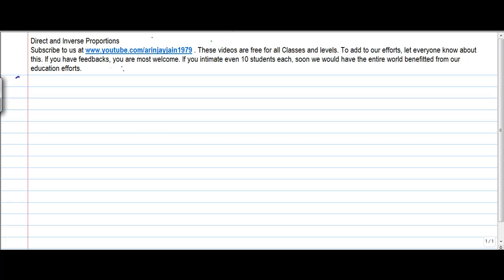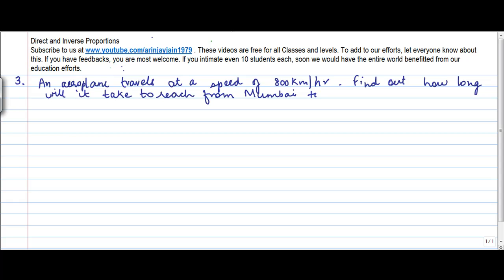Let's see problem number three on direct and inverse proportion. An aeroplane travels at a speed of 800 kilometers an hour. Find out how long will it take to reach from Mumbai to Delhi, which is at a distance of 1200 kilometers.